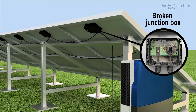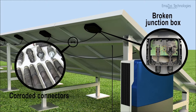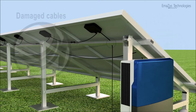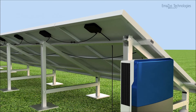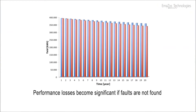Bypass diodes must also be functional. Corroded connectors, which frequently lead to series resistance issues and subsequent losses. Damaged cables and other insulation problems, which cause grounding faults that lead to energy loss from full strings. Performance losses become significant if faults are not found, and over time this means lost revenue.